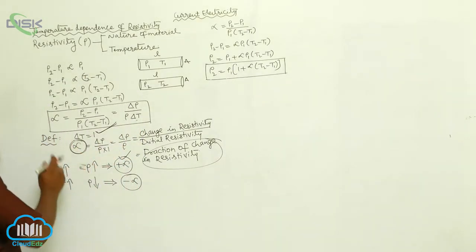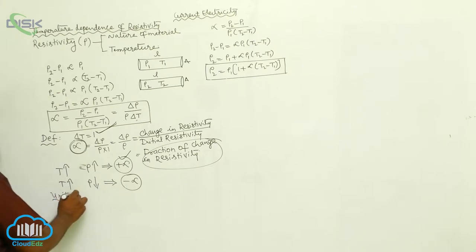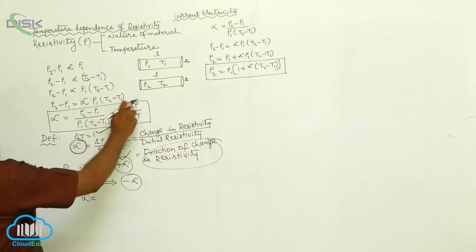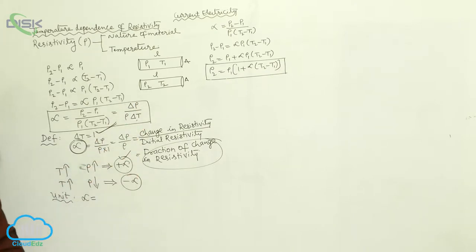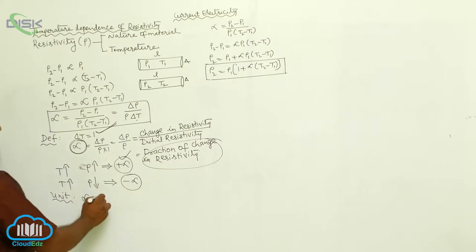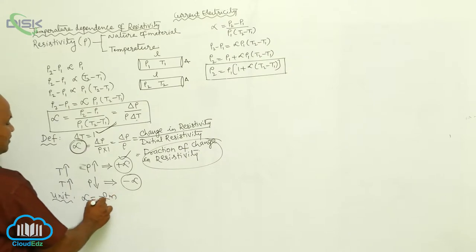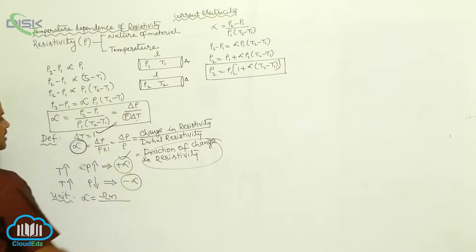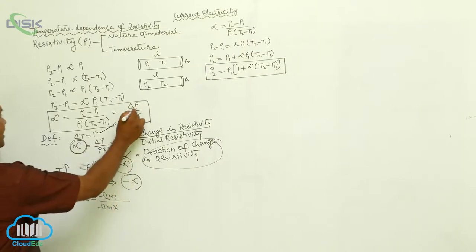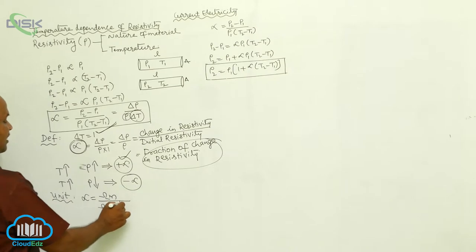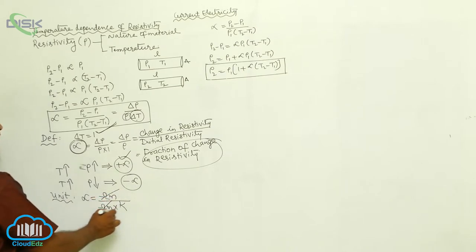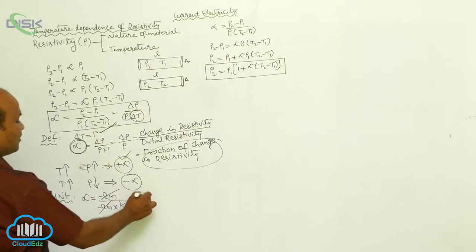What is the unit of alpha? Alpha equals Δρ divided by ρ into ΔT. Delta rho is the change in resistivity, which has units of ohm·meter. Resistivity unit is also ohm·meter. The temperature difference is in Kelvin. Ohm·meter divided by ohm·meter gets cancelled, giving K to the power of minus 1.